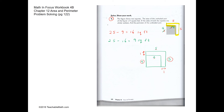To find the perimeter of the unshaded part, we trace around the L-shaped region. The perimeter would be 5 plus 5 plus 1 plus 4 plus 1, plus the remaining sides — which is 10 plus 6, giving us a perimeter of 16 feet.